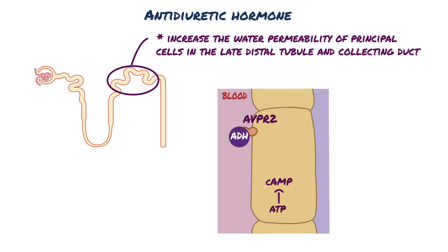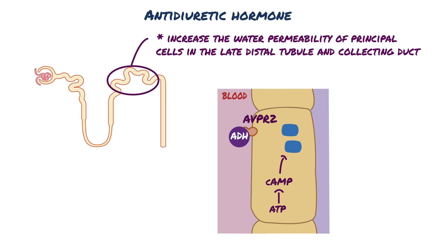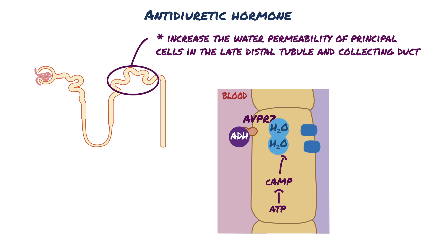Increased cAMP leads to two things. First, it signals the cell to produce more water channel proteins called aquaporin-2, which normally sit in vesicles inside the principal cell. Second, it causes vesicles loaded with aquaporin-2 to fuse with the cell membrane so that aquaporin-2 proteins embed themselves in the apical surface of the cells — the side facing the lumen of the tubule. These aquaporins allow water to travel out of the lumen and back into the blood.